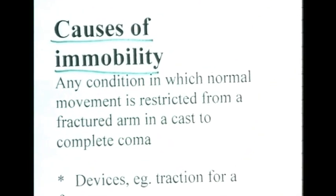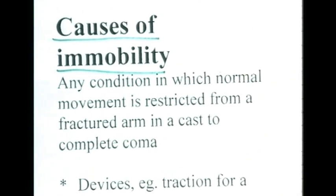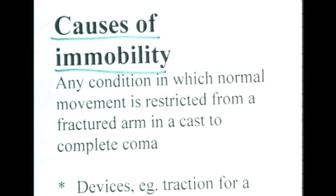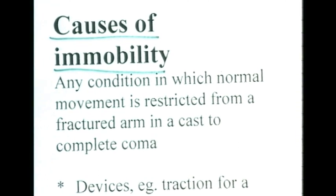What causes immobility? Well, this is any condition — any condition at all, whether traumatic or pathological — in which movement is restricted. Movement might be restricted in a simple case such as someone having a fractured arm and a cast on it, to being completely comatose and utterly immobile in every way. So, as we said: whole body immobility or part body immobility, whether caused by disease or whether caused by trauma.